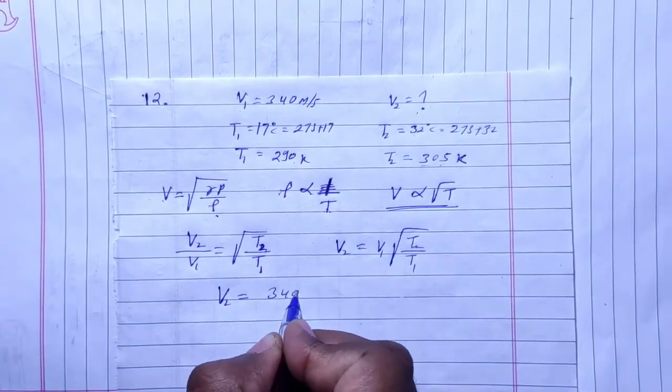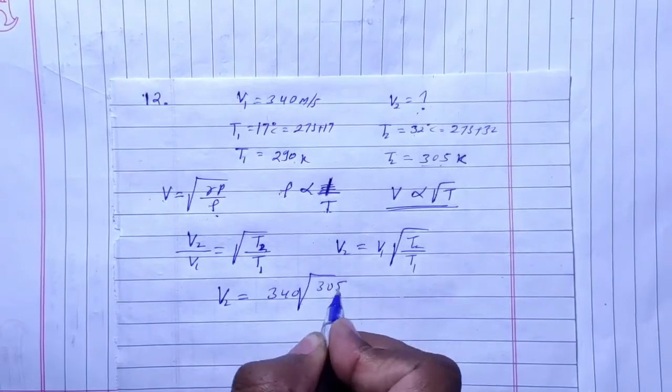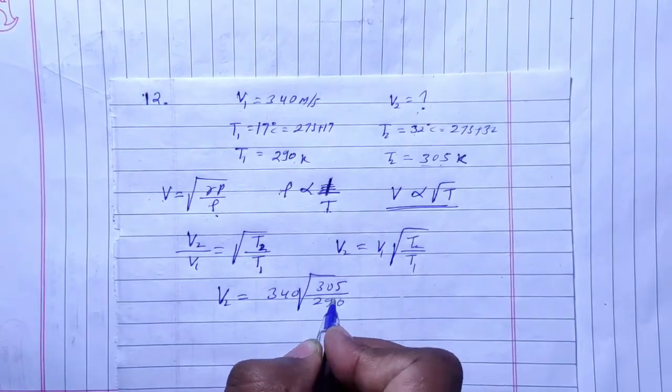So V2 is equal to V1 is 340 and T2 is 305 and T1 is 290. Right? Let's solve this.